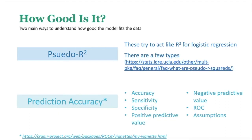The other method is prediction accuracy — basically asking how well our predictors end up predicting our outcome. There are many ways of measuring this, including accuracy, sensitivity, specificity, and more. These two approaches — pseudo R-squared and prediction accuracy — are two perspectives on how to assess how good the model is.